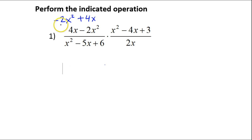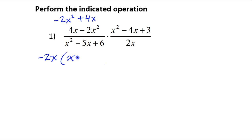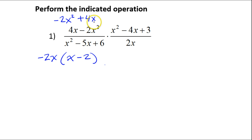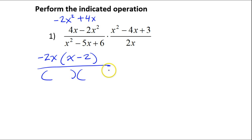So this would really be negative 2x squared plus 4x. If I factor this numerator, the GCF is negative 2x, so that's going to leave behind x minus 2. Notice it has to be minus 2 — negative 2x times negative 2 gives positive 4x, because a negative times a negative is a positive.